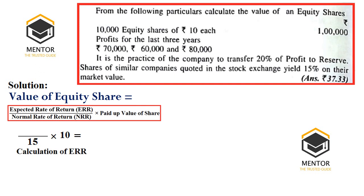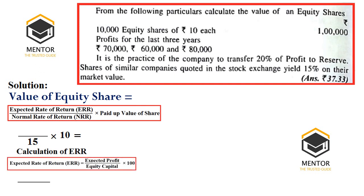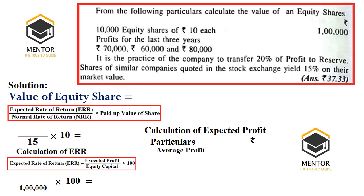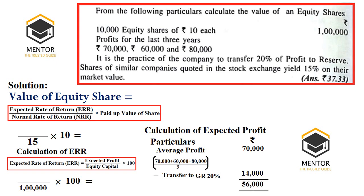We apply the formula: ERR divided by NRR into paid-up value of share. ERR is unknown; NRR is 15%; paid-up value is Rs. 10. Calculation of ERR = expected profit divided by equity capital (Rs. 1,00,000) into 100. For expected profit: average of last 3 years' profits — (70,000 + 60,000 + 80,000) ÷ 3 = Rs. 70,000. Deduct transfer to reserve at 20% = Rs. 14,000; leftover expected profit = Rs. 56,000. ERR = 56,000 ÷ 1,00,000 × 100 = 56%. Value of share = 56 ÷ 15 × 10 = Rs. 37.33.